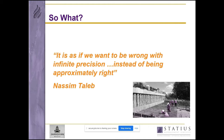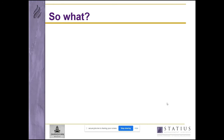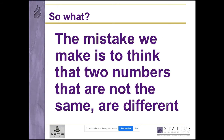There's a great management thinker called Nassim Taleb who says it's as if we want to be wrong with infinite precision instead of approximately right. We fall into the trap of thinking that if we process data to two or three decimal places and highlight parts of a table, we're analyzing data — it's a bit like averaging telephone numbers: mathematically doable but making no sense whatsoever. The mistake we make is to think that two numbers that are not the same are different.